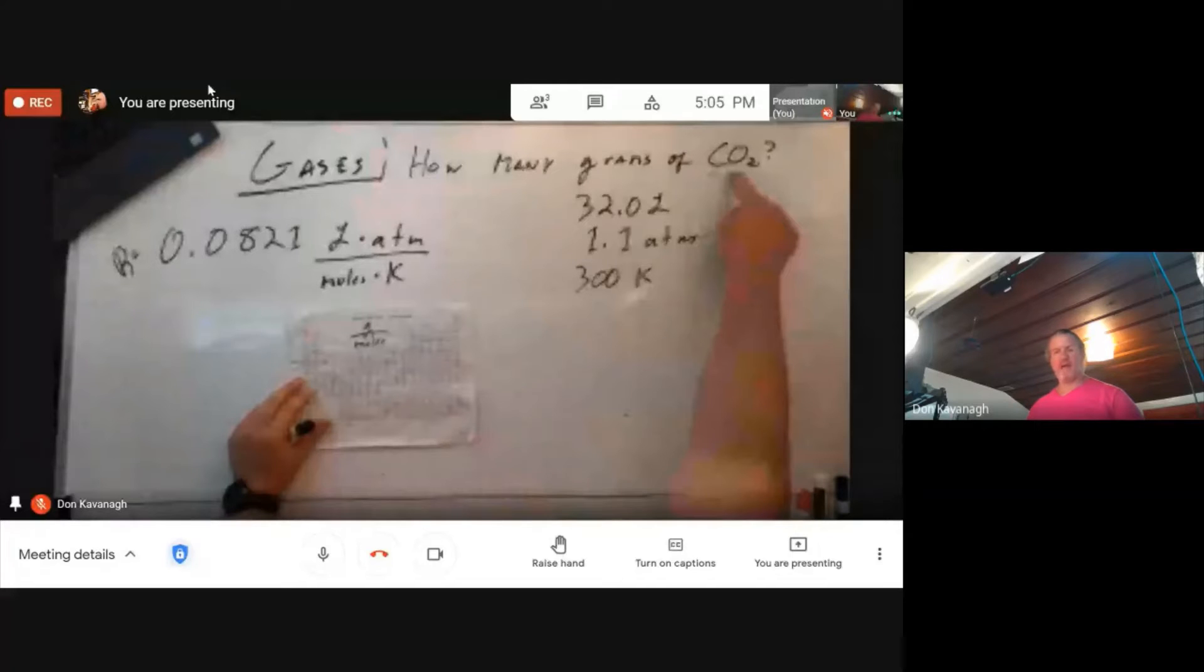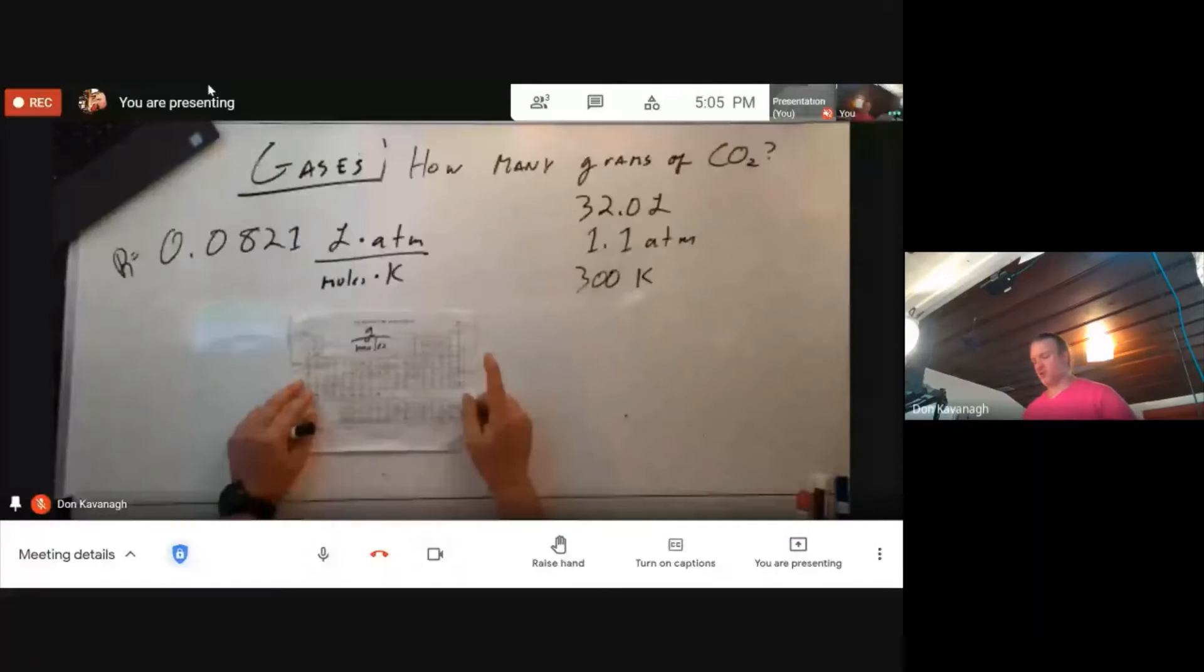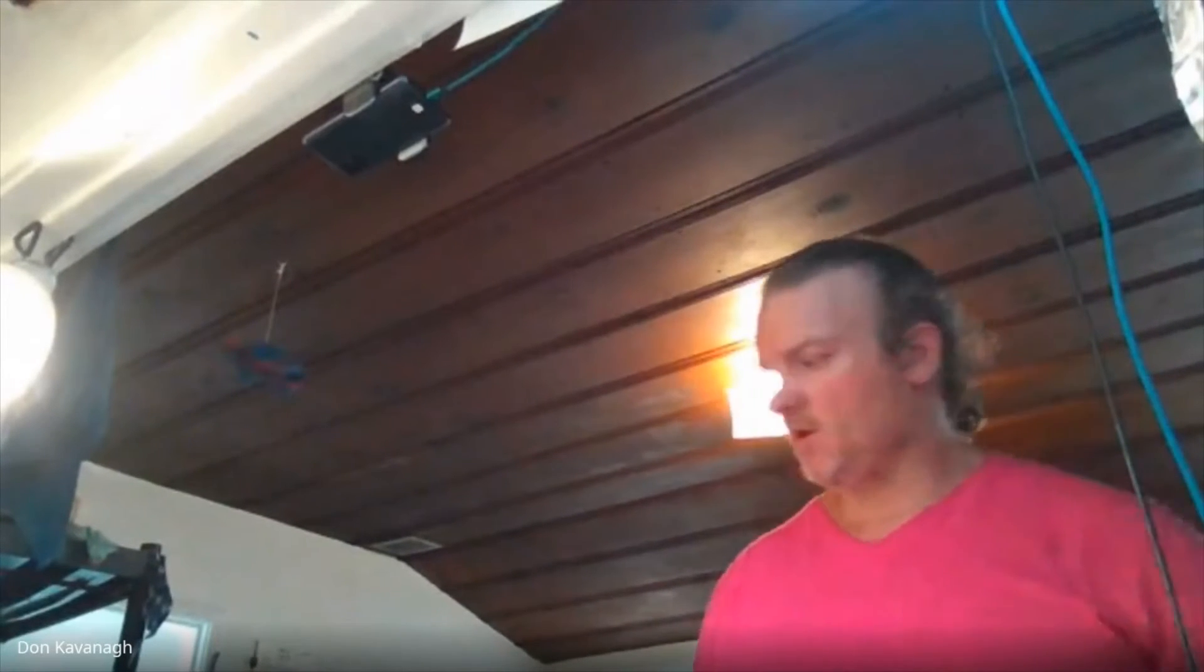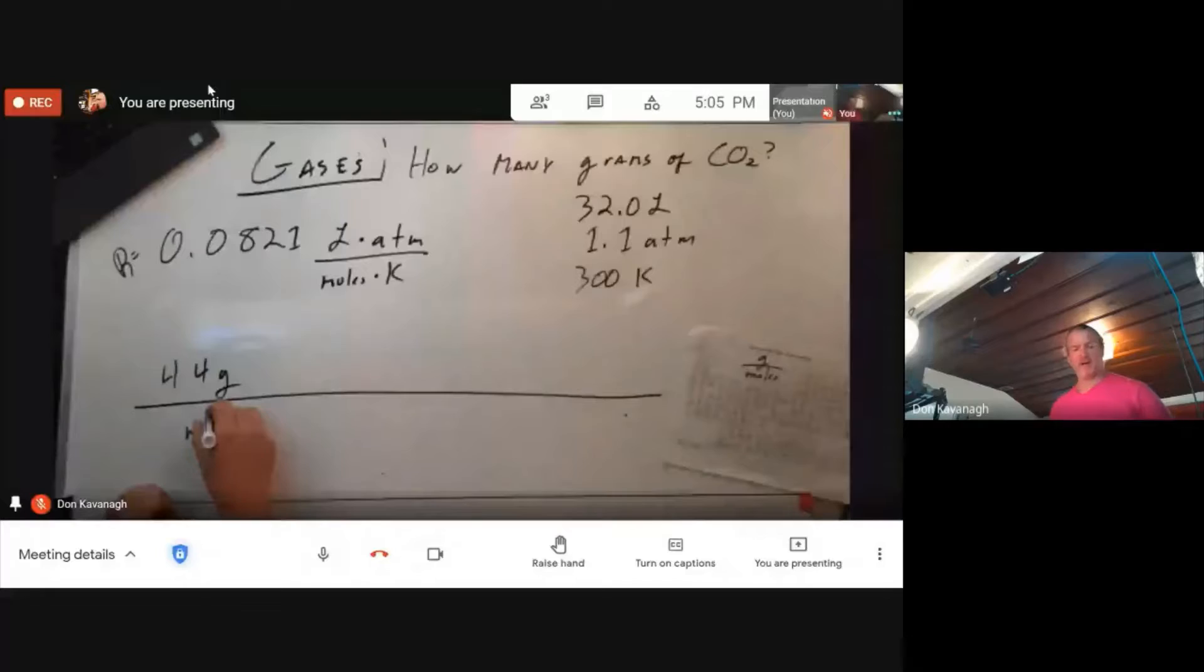And when we add up all the elements for CO2 we get 44 grams per mole. So that's what we're going to start our scaffold with. We want our final answer in units.